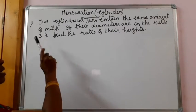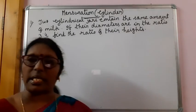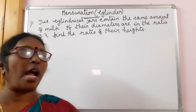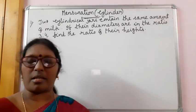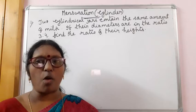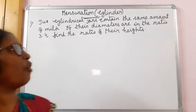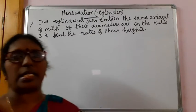Ratio of the diameters of two cylindrical jars are given to us. We have to find the ratio of their heights where the amount, the quantity of milk in both the jars is the same.